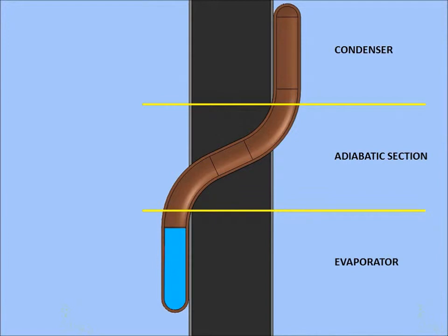The evaporator is outside and in direct contact with solar radiation. The adiabatic section is inside the wall and surrounded by foam, and the condenser is inside the building envelope.